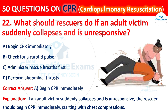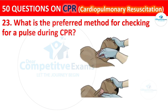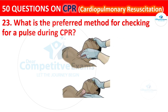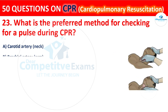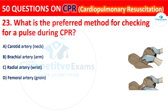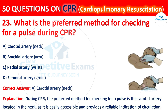Question 23: What is the preferred method for checking for a pulse during CPR? Your options are: Carotid artery (neck), Brachial artery (arm), Radial artery (wrist), or Femoral artery (groin). The correct answer is A: Carotid artery (neck). During CPR, the preferred method for checking for a pulse is the carotid artery, located in the neck, as it is easily accessible and provides a reliable indication of circulation.